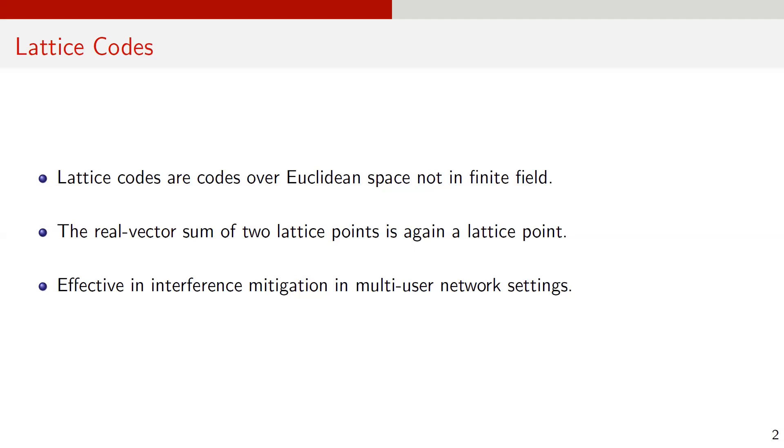Lattice codes are the Euclidean space analog of these linear error correcting codes. After encoding, a lattice code directly outputs a lattice point in Euclidean space. Also, the real vector sum of two lattice points is again a lattice point, which means that these codes have an algebraic structure.